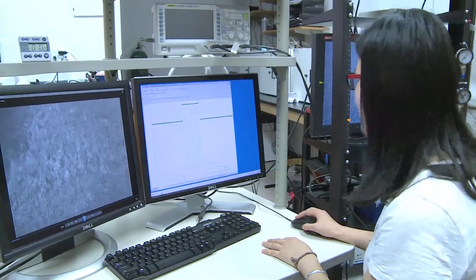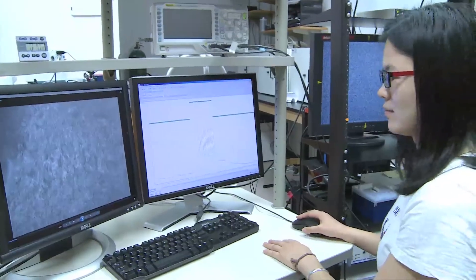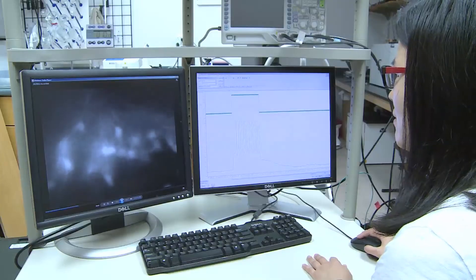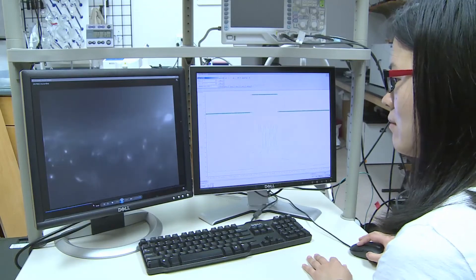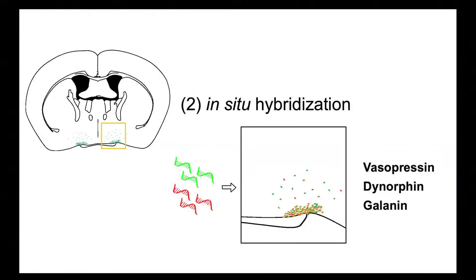We further performed whole-cell patch-clamp recordings on AANs. It turned out that AANs can be depolarized by multiple distinct anesthetics widely used in clinical and research settings, including isoflurane, propofol, ketamine-xylazine, and dexmedetomidine, consistent with our staining and in vivo recording results. Using in situ hybridization, we further uncovered that AANs express multiple neuropeptides and hormones, including vasopressin, dynorphin, and galanin.